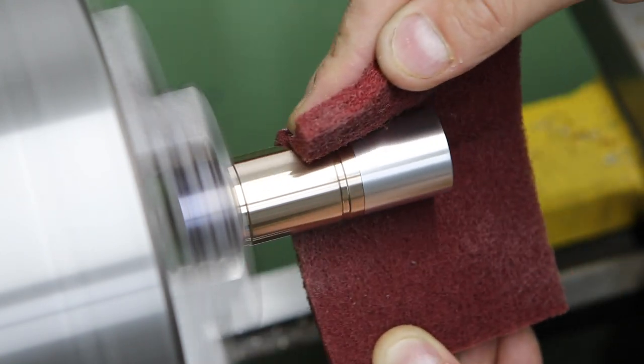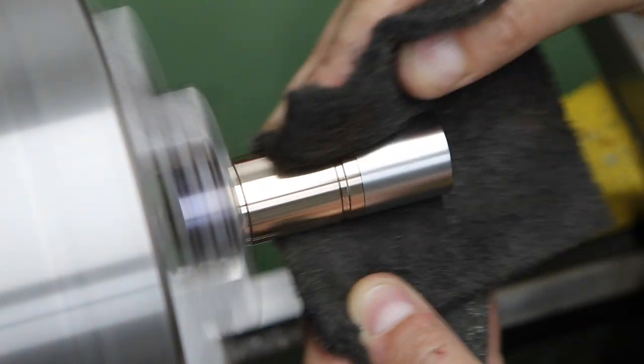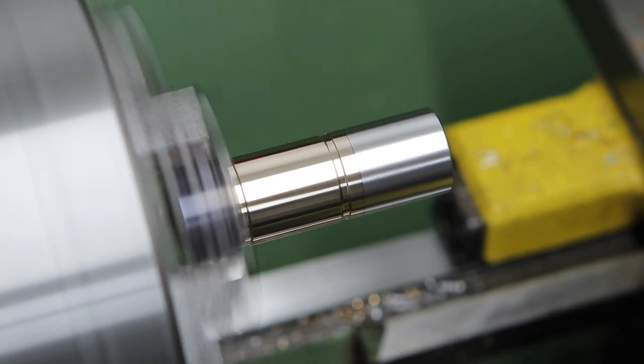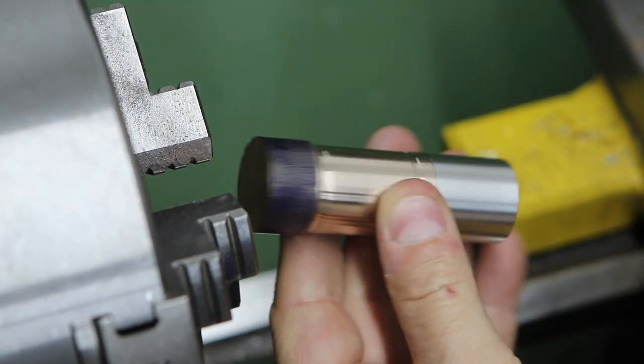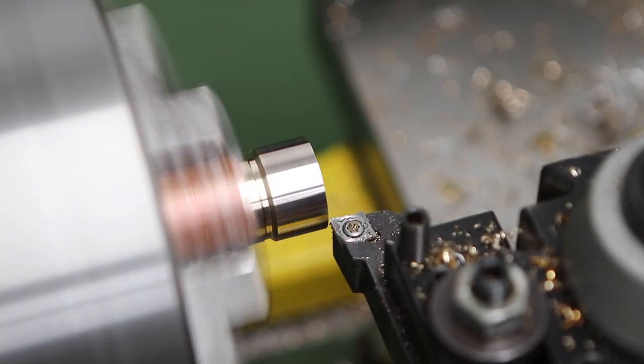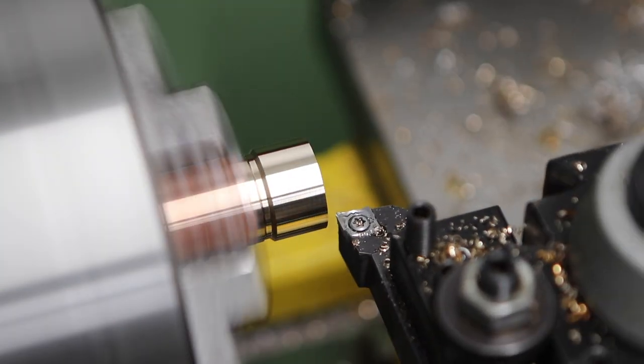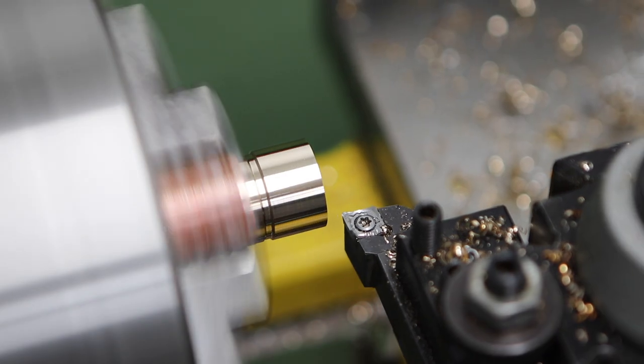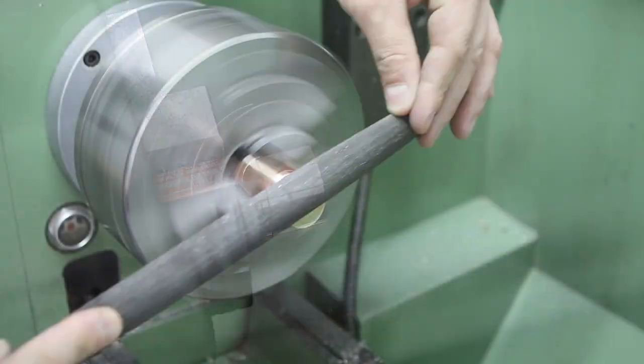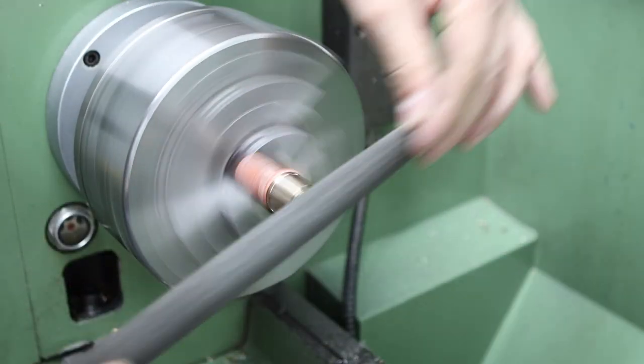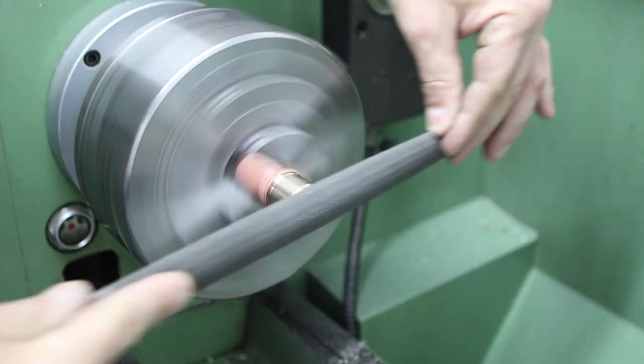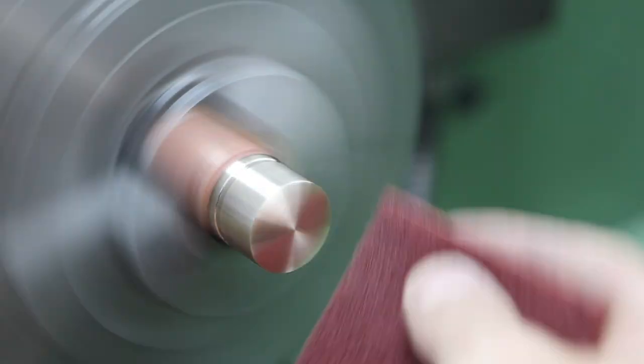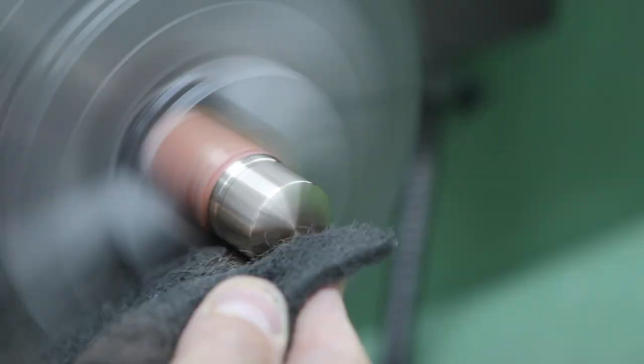I think it's looking pretty good, so it's now time to flip it around and finish the final end. Again, I've chosen to dome the end of the head here. I'm not doing too much, probably a sixteenth of an inch, maybe one and a half or two millimeters, something like that. And then finishing off with some scotch brite.